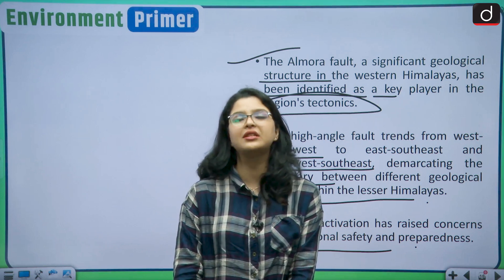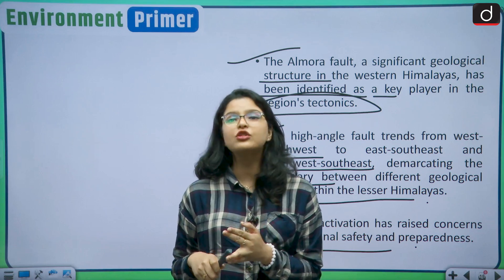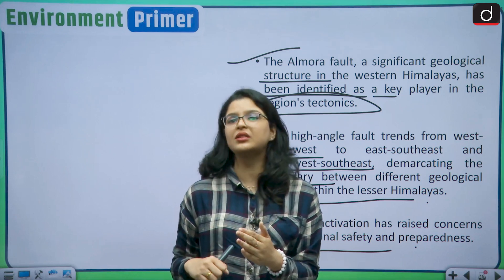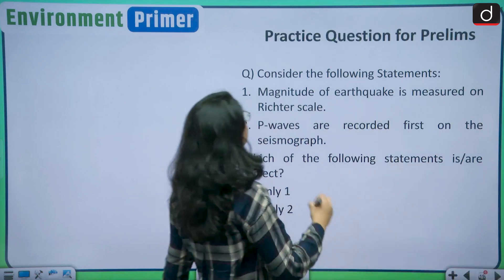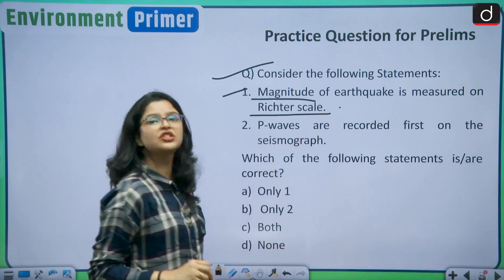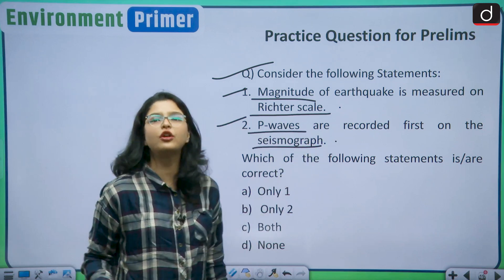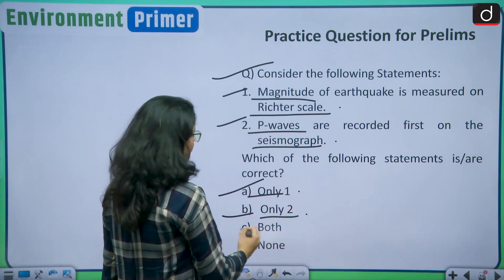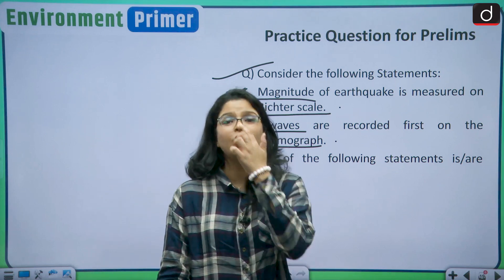With this we come to the conclusion of today's discussion. We have seen what earthquakes are, how they are caused, what caused the world's earthquakes this year, and what caused Indian earthquakes this year. Now for a practice question for your prelims examination: Consider the following statements — Statement 1: Magnitude of earthquake is measured on the Richter scale. Statement 2: P waves are recorded first on seismographs. Which of the statements is/are correct? Option A: One only. Option B: Two only. Option C: Both one and two. Option D: None of the above. Kindly drop your answers in the comment box below.